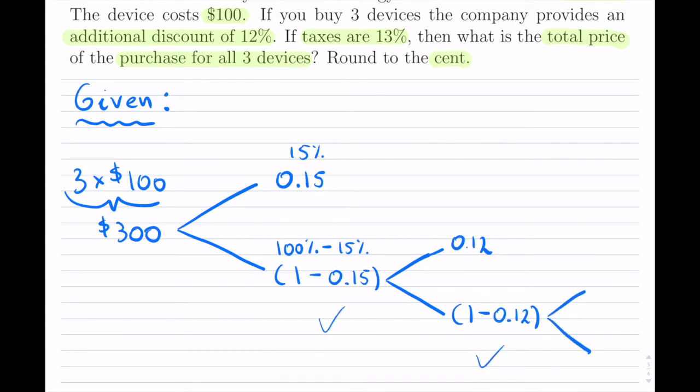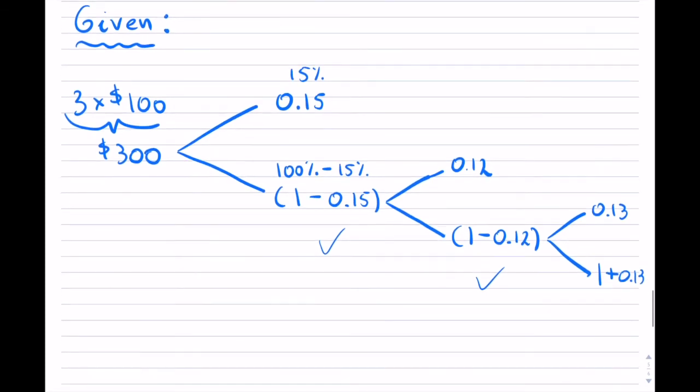There's some taxes that are applied. So, there's 13% tax. Tax is obviously not a discount, so we have to say plus 13%. This is kind of my flow tree of what happens.